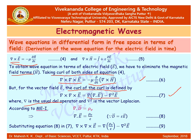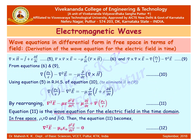Recalling Maxwell's first equation, the divergence of D equals the charge density ρᵥ. Replacing D with εE, we get del·E = ρᵥ/ε. Substituting this into the curl-of-curl expression, the right-hand side becomes del(ρᵥ/ε) − del²E.